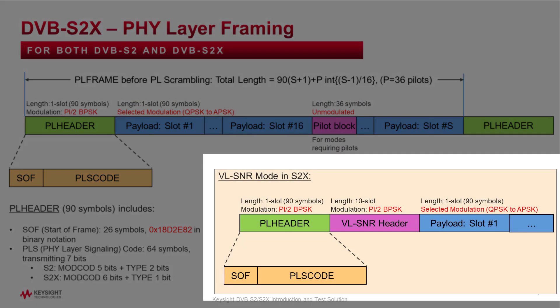DVB-S2X has an option to support very low SNR operation. In the physical layer frame, it adds the real SNR header, which is 10-slot length and also uses π/2 BPSK modulation.